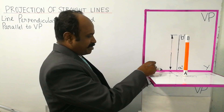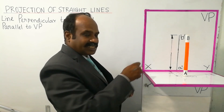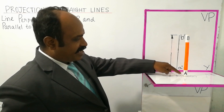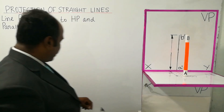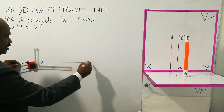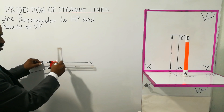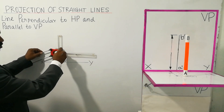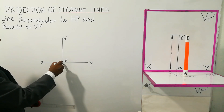This pink color line is called the reference line. This is where VP and HP connect — it is called the XY line. First, draw the XY line. The contact point is A — this is the front view point. Another end point is B. The height is 100mm, and 100mm is the length of the line between the end points. A' B' distance is 100mm.